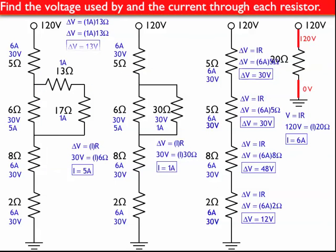And then, I use Ohm's law, V equals IR, delta V equals IR, to find the voltage for each of these resistors. And now I have the voltage and the current for each resistor on the original circuit on the left.